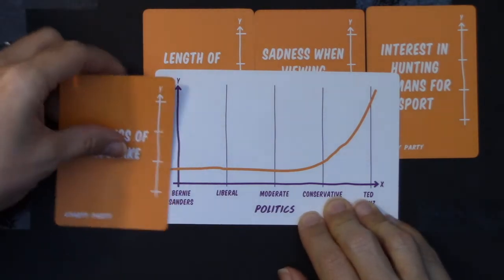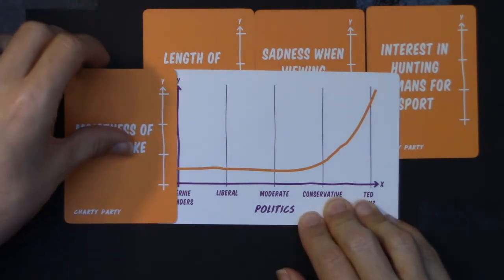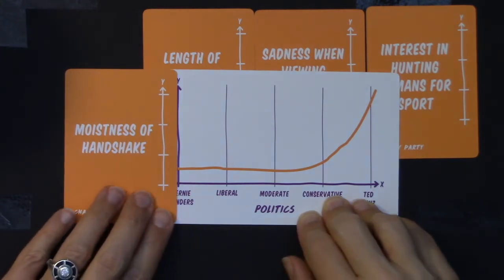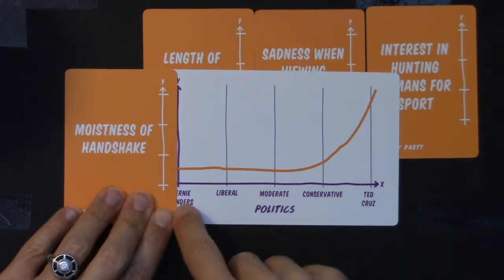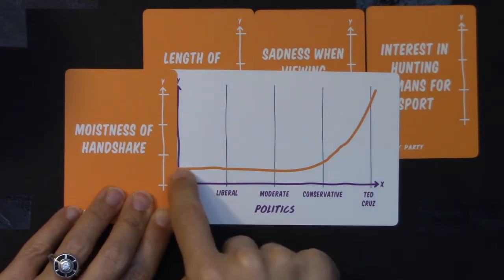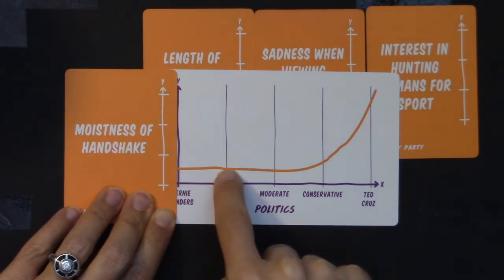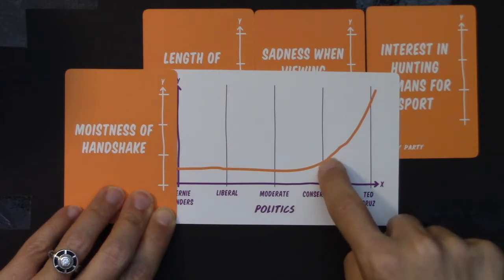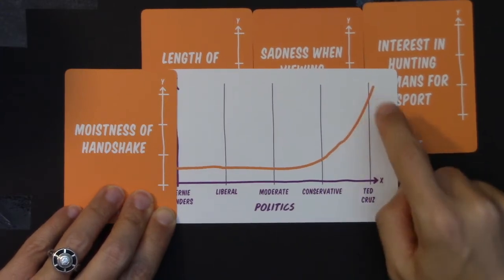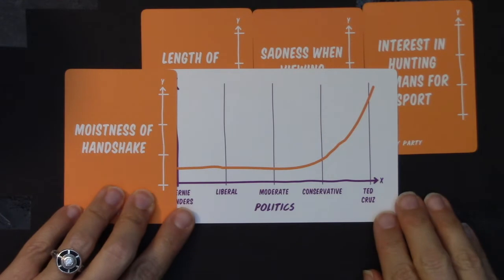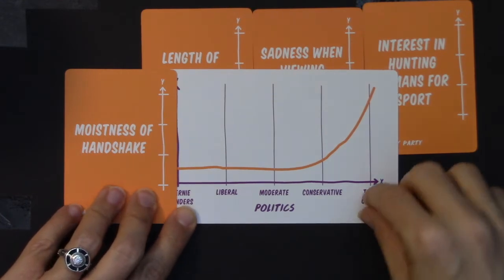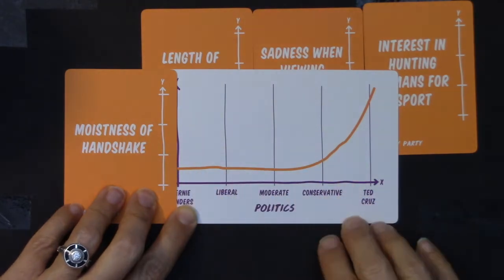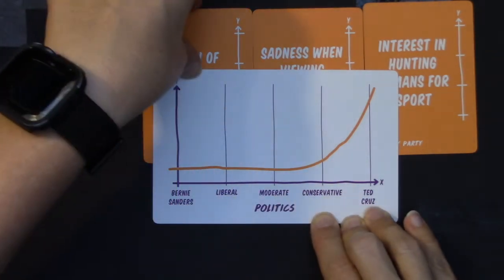So let's see if we can find a card that matches. If this were my y-axis — moistness of a handshake — it would say Bernie's handshakes are not that wet, liberals not that wet, moderates not that wet, conservatives maybe a little higher, but it really creeps up for Ted Cruz. I don't know if his handshakes are particularly moist, so I'm really not sure this one works. I'll put it off to the side.